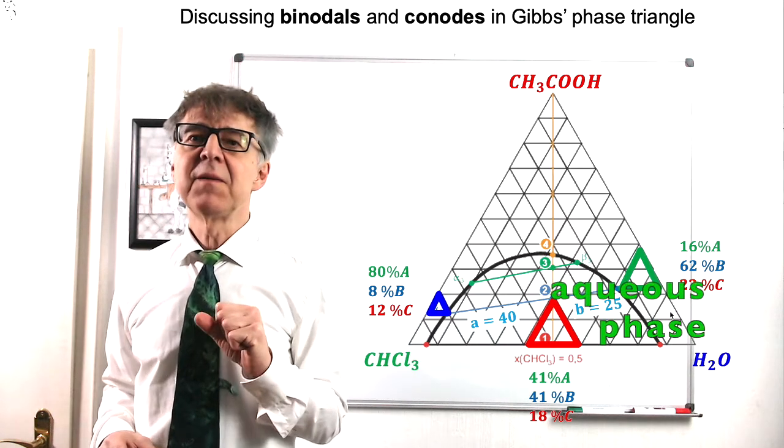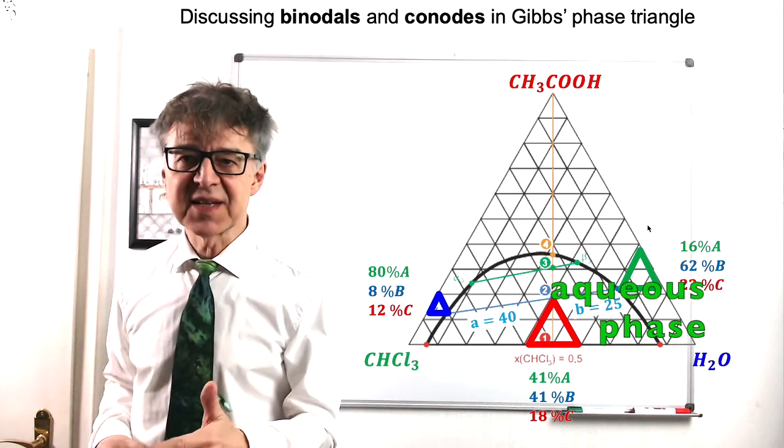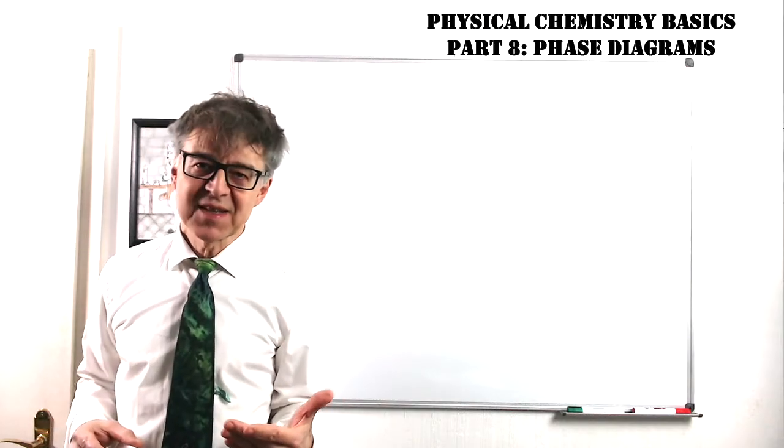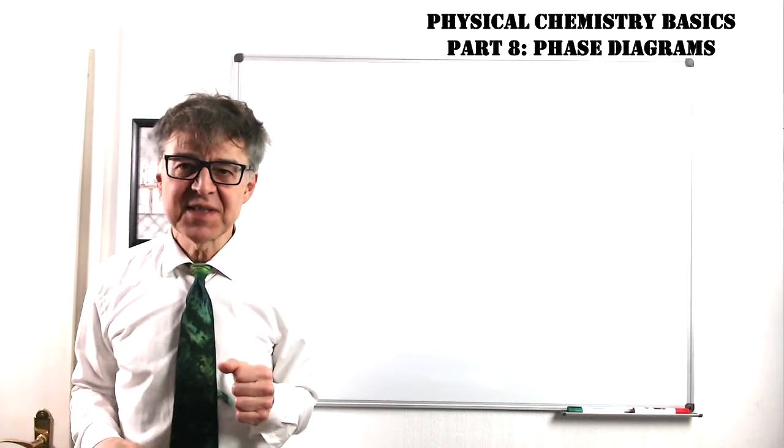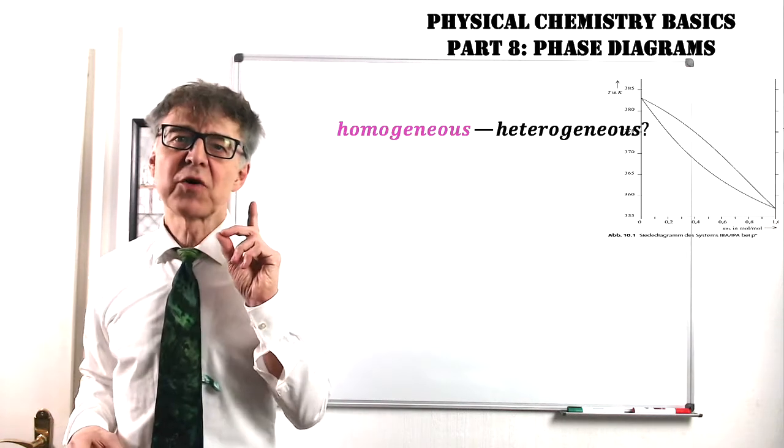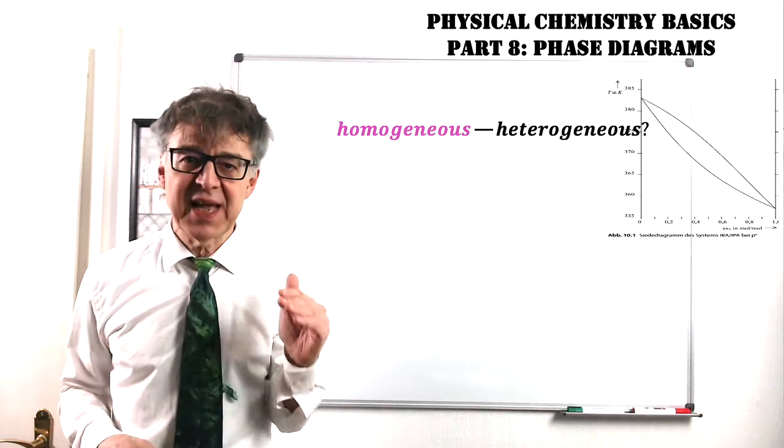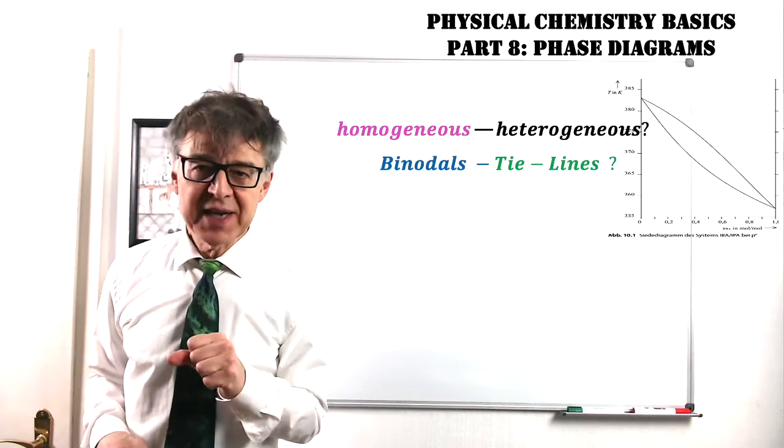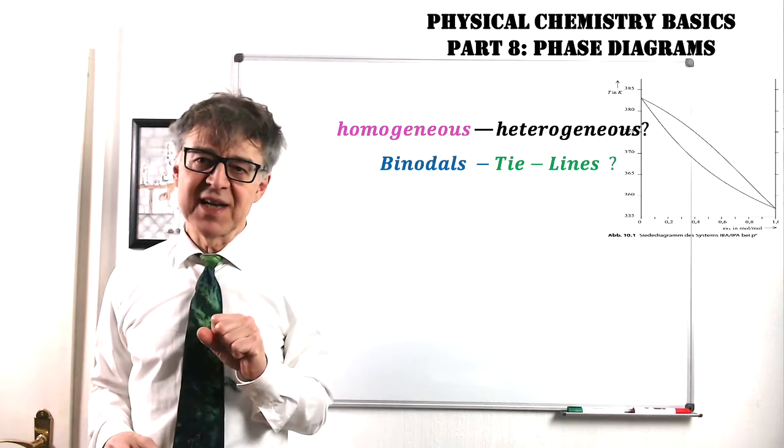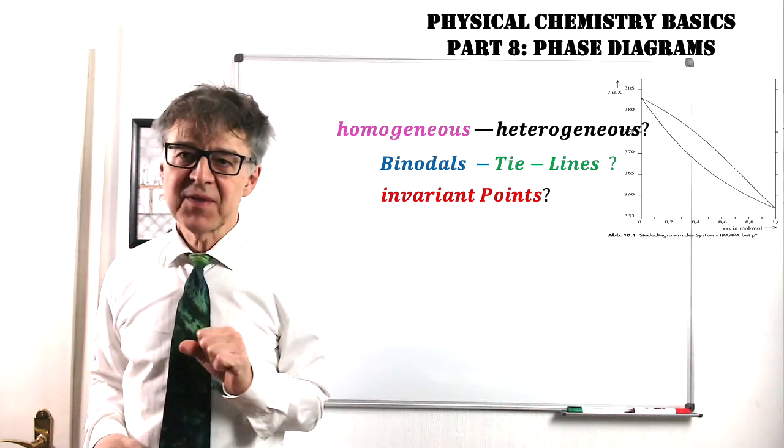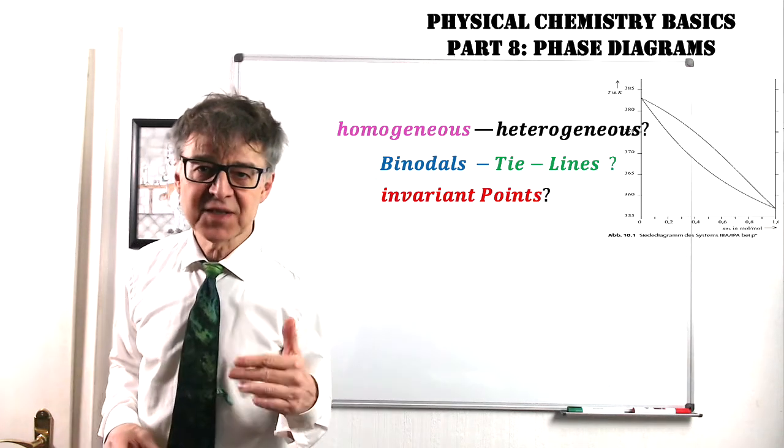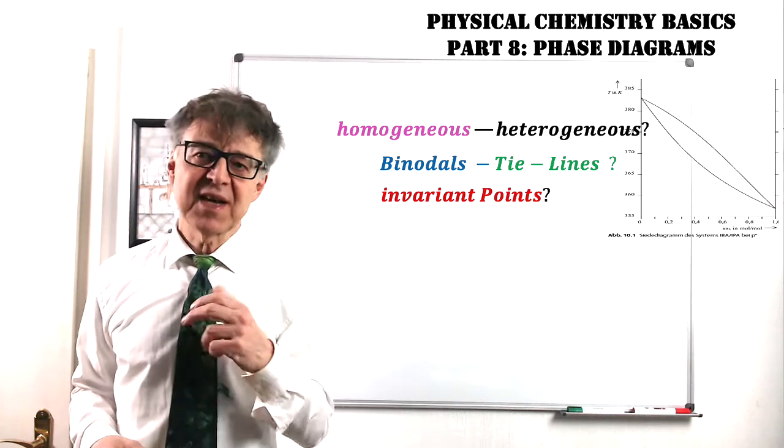Let us summarize. The best way to discuss phase diagrams is that you look first for the homogeneous and heterogeneous regions, then label the binodals and draw in some tie lines. Finally, depict the invariant points and specify the processes that take place at these points.